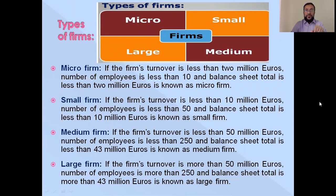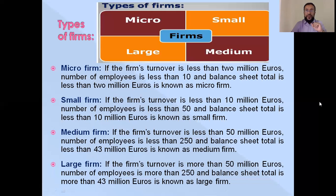This diagram shows different types of firms: micro, small, medium, and large. A micro firm is one where turnover is less than 2 million euros, number of employees is less than 10, and balance sheet total is less than 2 million euros.